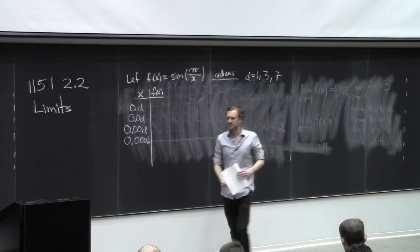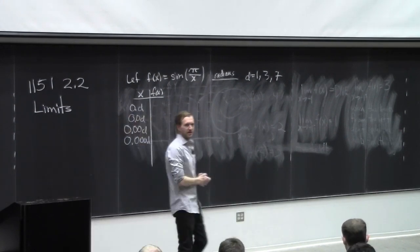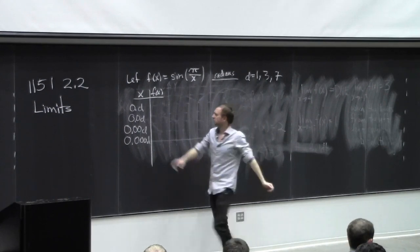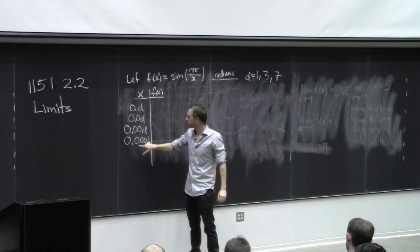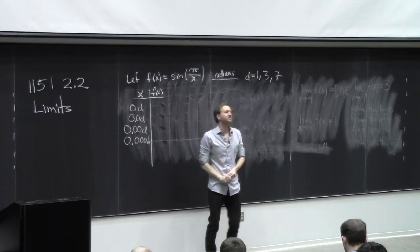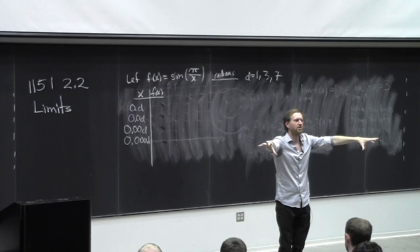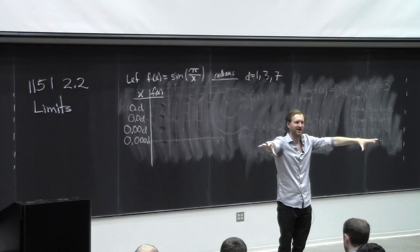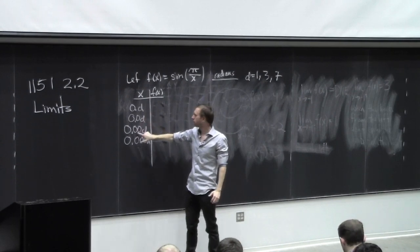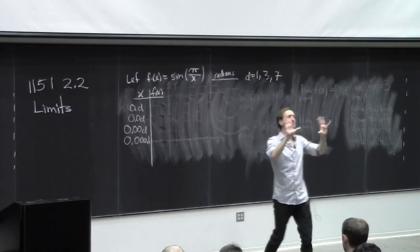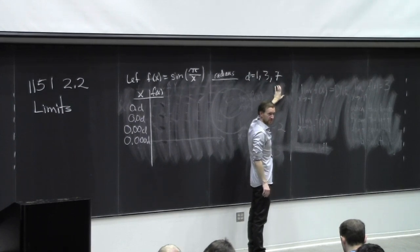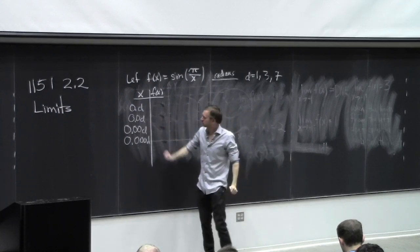If you're sitting on the edges, I want d to equal 1 — so you're doing 0.1, 0.01, 0.001, 0.0001. If you're in the front half of the lecture hall, I want d to be 3 — that's 0.3, 0.03, 0.003, 0.0003. If you're sitting in the back, let d be 7 — so 0.7, 0.07, 0.007, 0.0007.